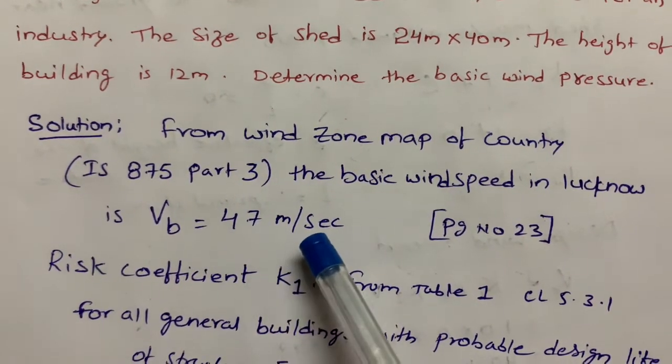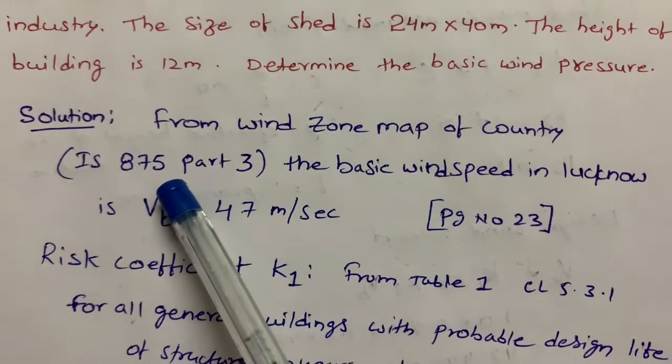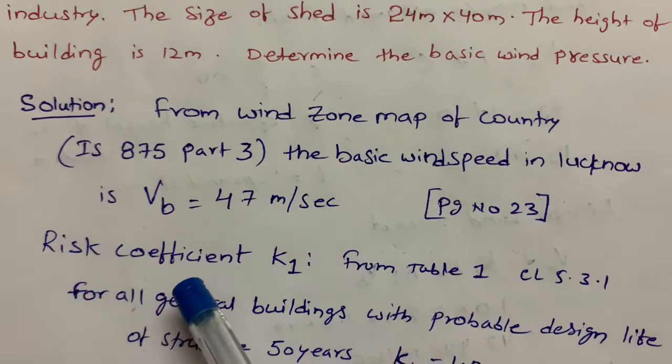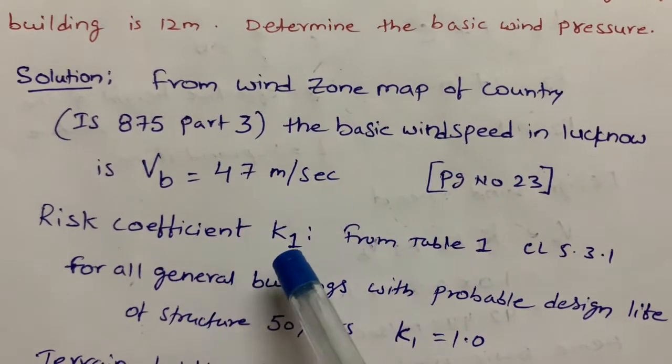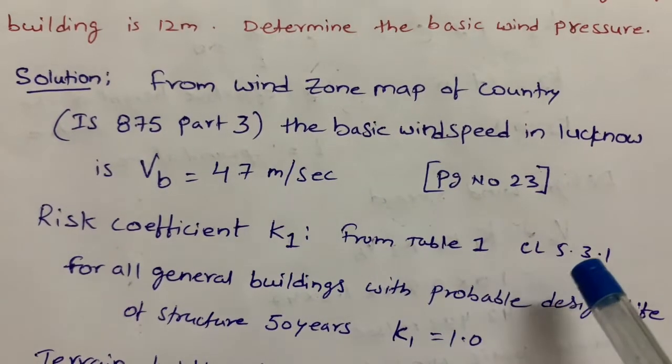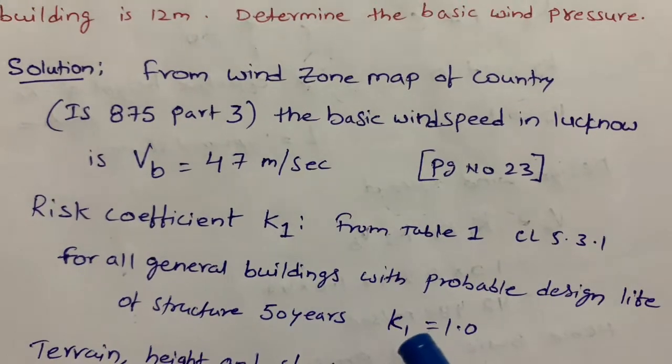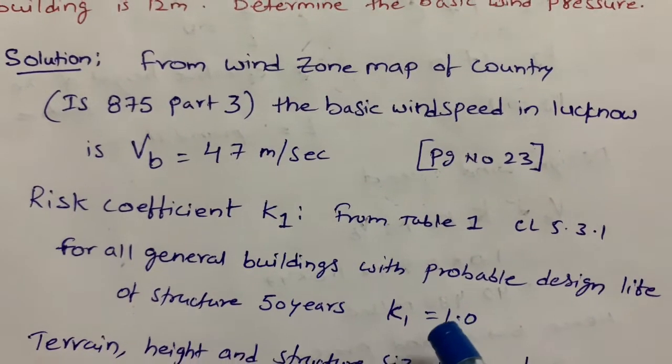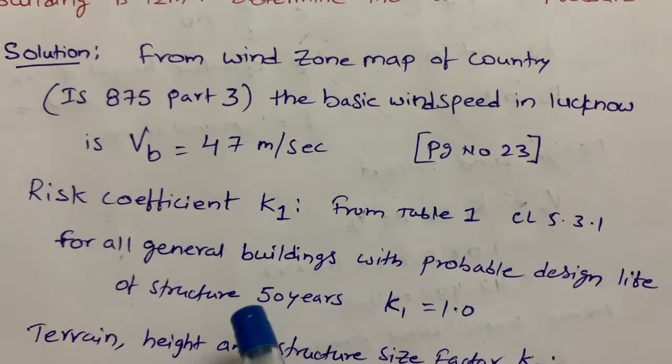Here we are considering the risk coefficient K1 from Table 1, Clause 5.3.1. The code specifies that K1 value is 1.0 for all general buildings with probable design life of structure 50 years.